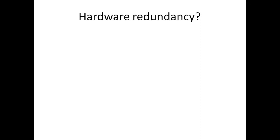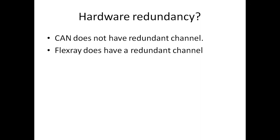What about hardware redundancy? In CAN, there is no hardware redundant channel — you will have only one channel. Whereas in FlexRay, there is a redundant channel: Channel A and Channel B. There will be two channels, so even if one channel fails, communication can happen on the other channel.